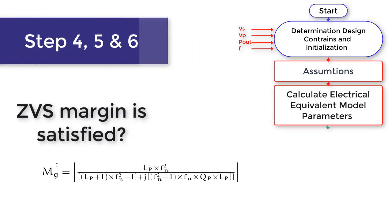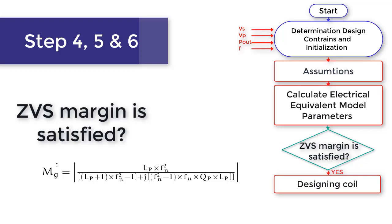In the next step, the zero voltage switching margin is checked. If satisfied, the coil parameters are designed based on the calculated parameters.